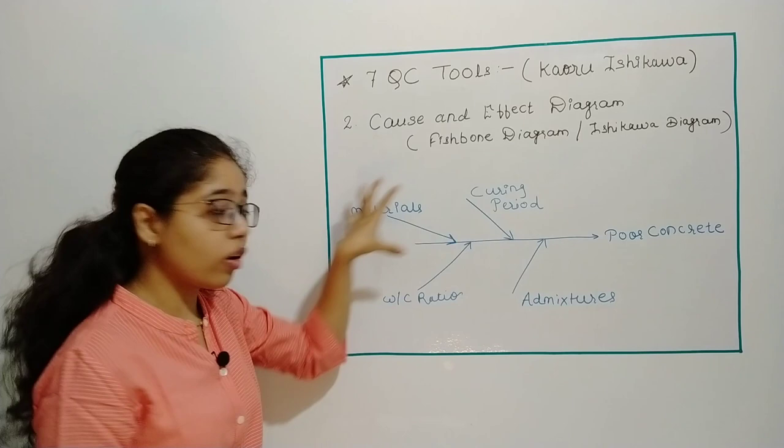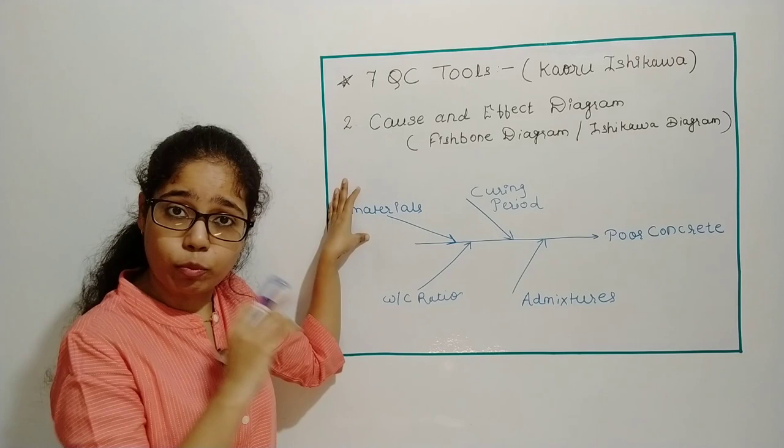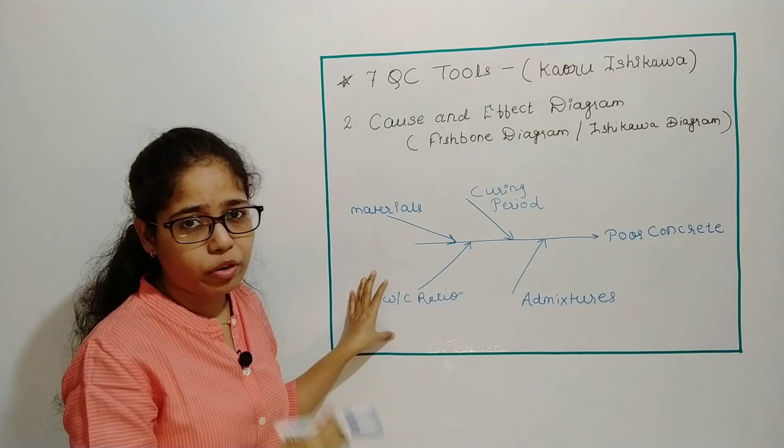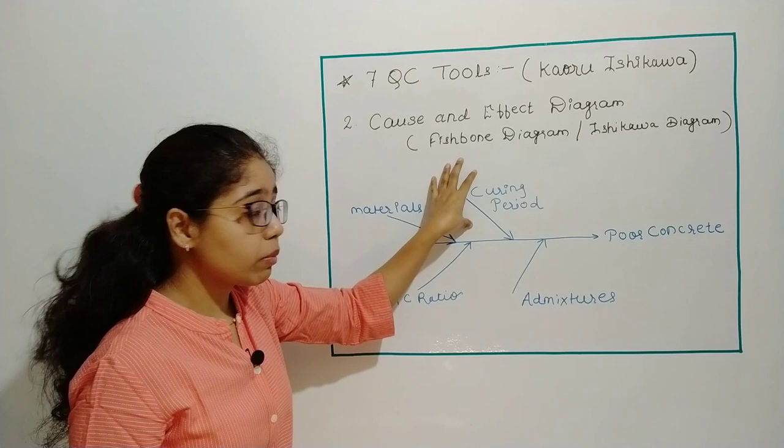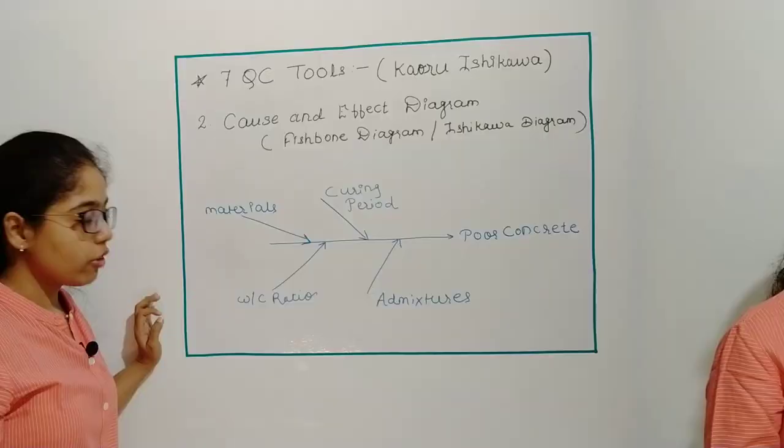I will list these causes and then I will check each cause one by one. If I have used the materials properly or not, water-cement ratio was used properly or not, like 0.45 or 0.5. Did I follow the mix design or not? Did I do the curing period properly or not? Then the admixtures - all these I will check.